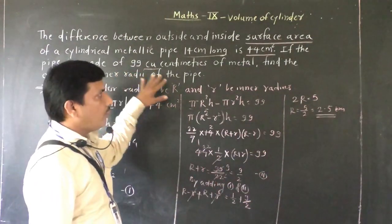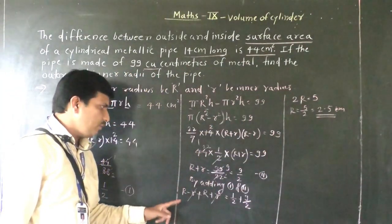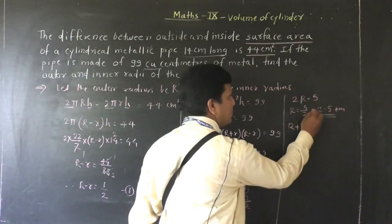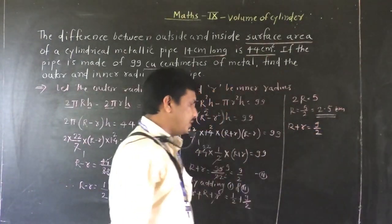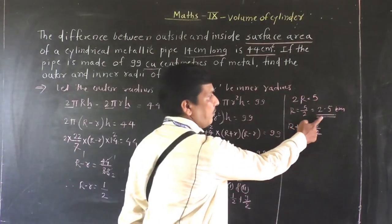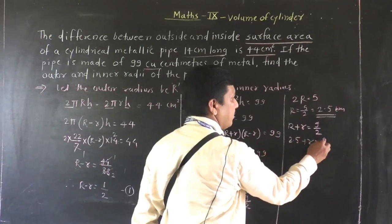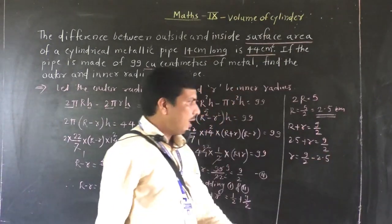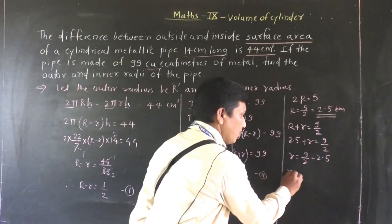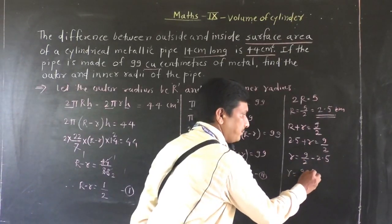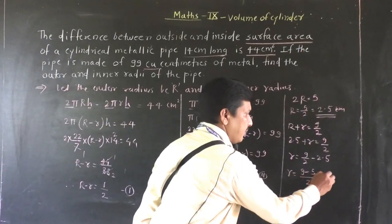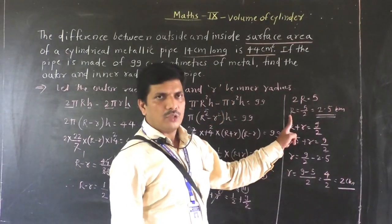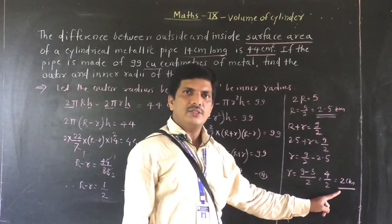Now we have to find the inner radius. We substitute R equals 2.5 into the second equation: R plus r equals 9/2. So 2.5 plus r equals 9/2. Therefore r equals 9/2 minus 2.5, which gives r equals 9 minus 5 over 2, so r equals 4/2 equals 2 centimeters. Finally, we have both radii: the outer radius R is 2.5 cm and the inner radius r is 2 cm.